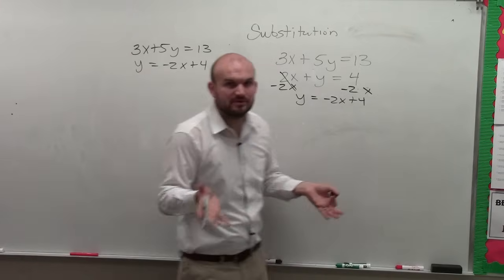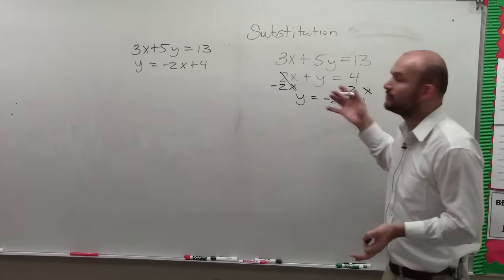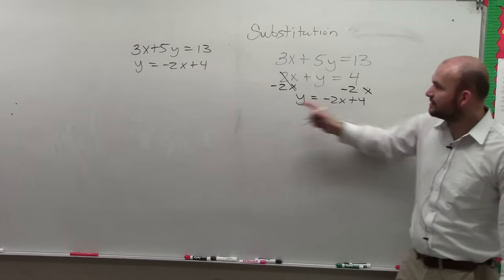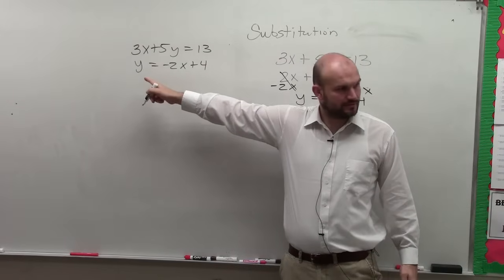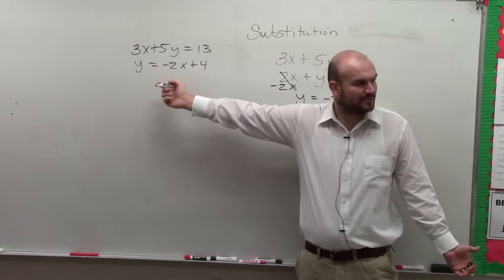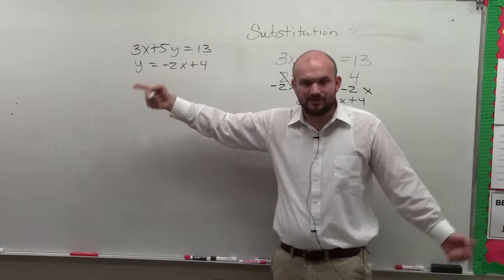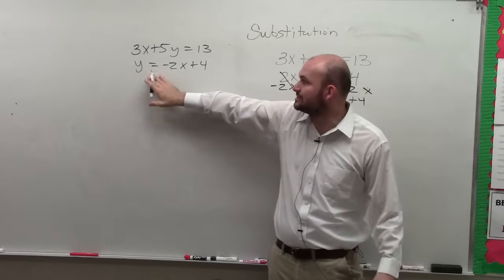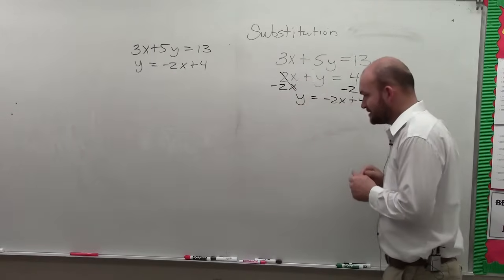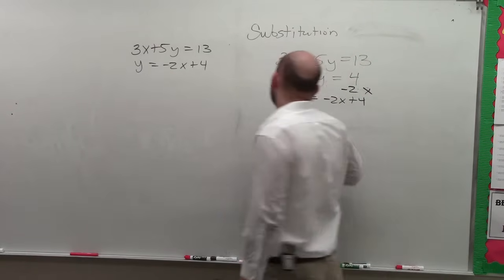So basically, when we're doing substitution, we want to be able to have it written with a variable isolated. And you can do this when it's not equal to 1, but then you'd have to undo multiplication or division. So it's easiest when you have a variable that has a coefficient of 1.